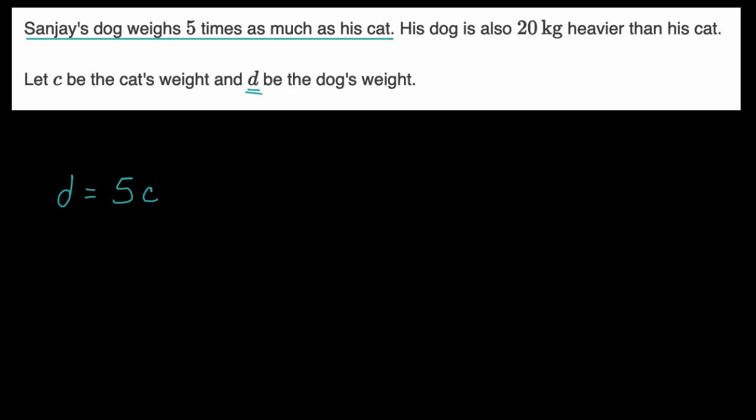And so what's another one? Well, then we are told his dog is also 20 kilograms heavier than his cat. So we could say that the dog is going to be equal, the dog's weight is going to be equal to the cat's weight, plus what, plus 20 kilograms. We're assuming everything's in kilograms, so I don't have to write the units.